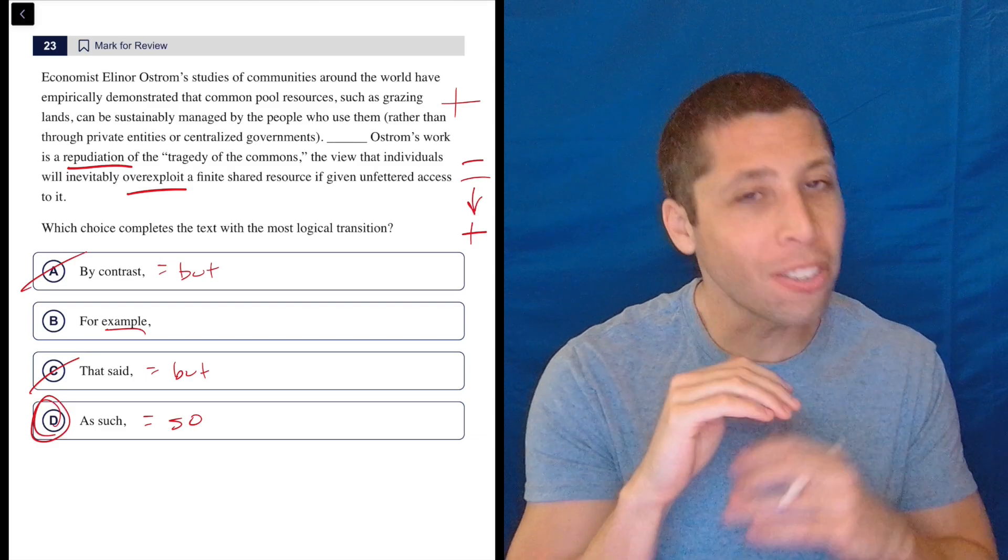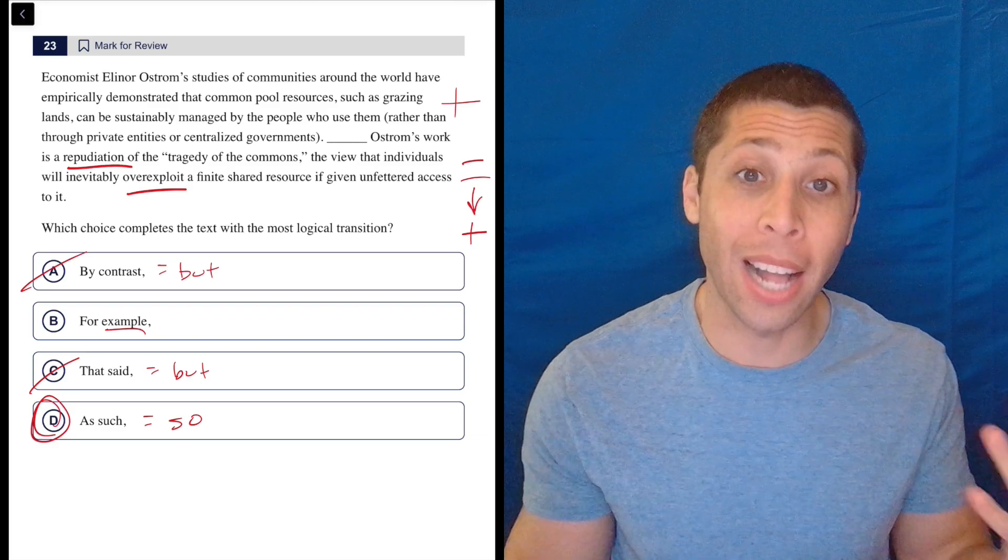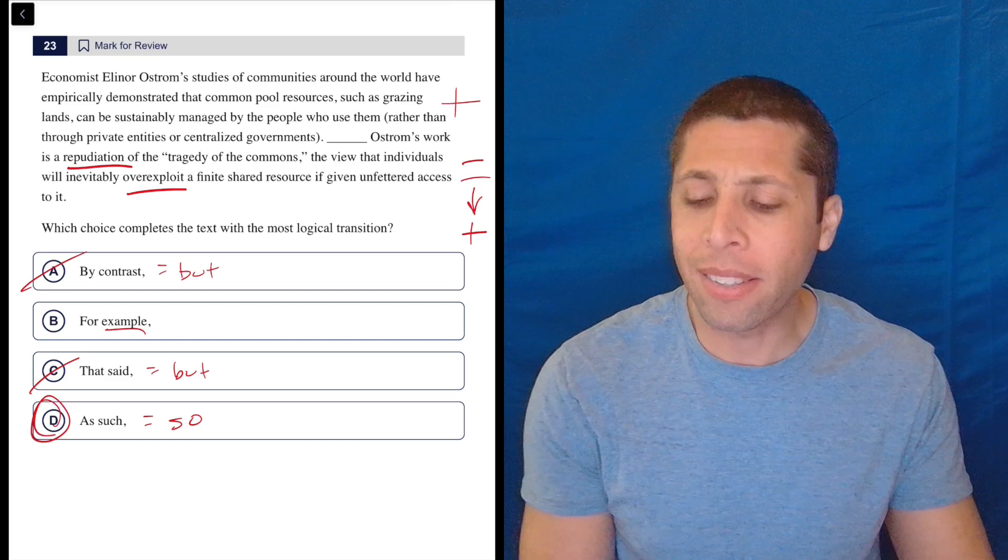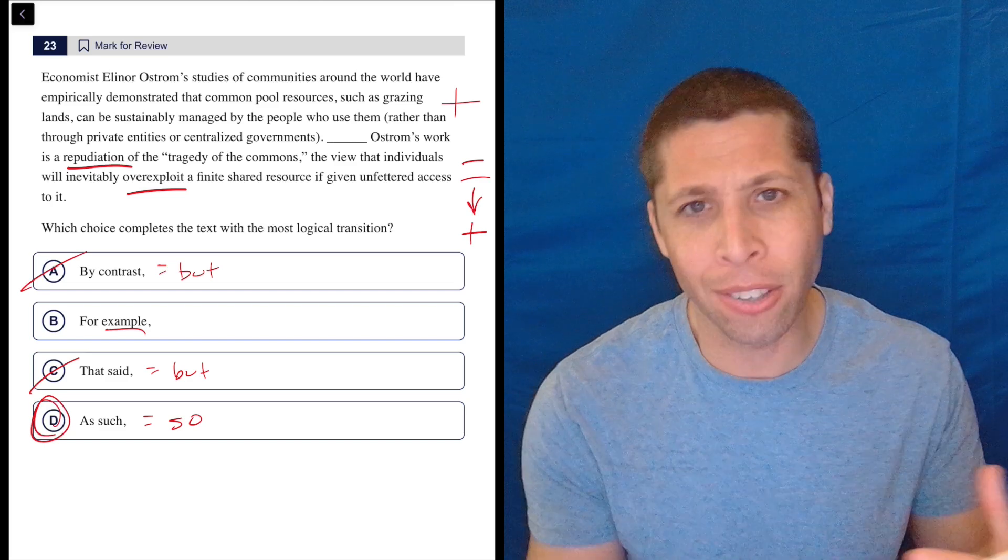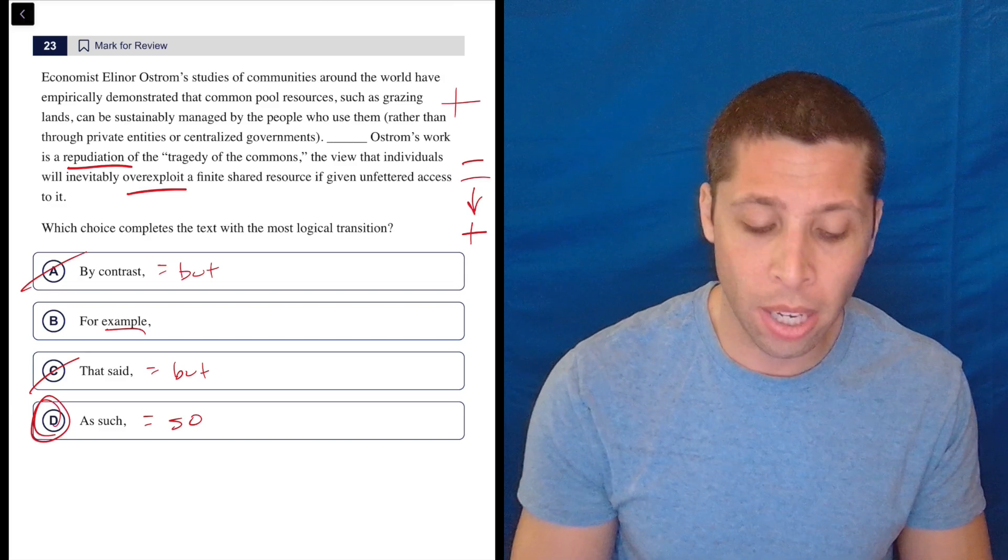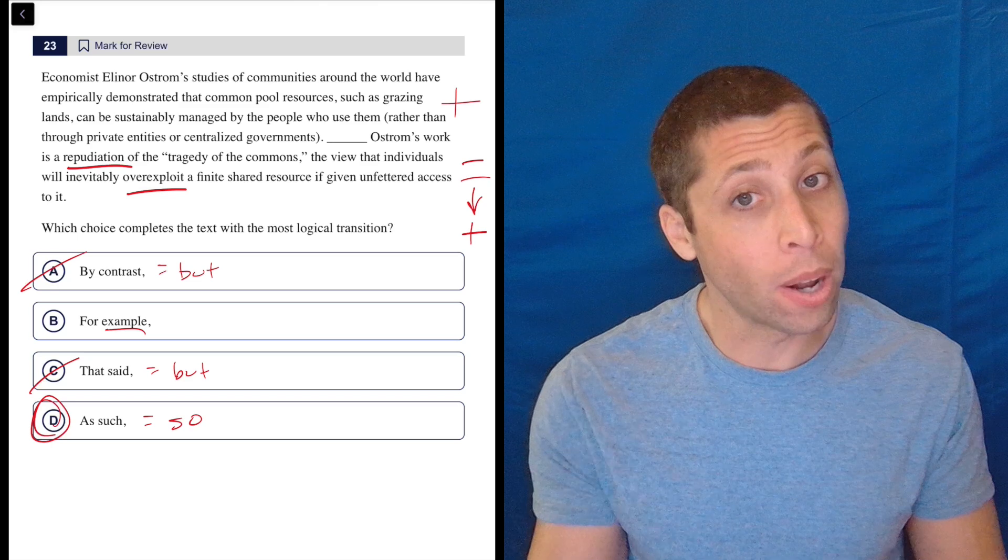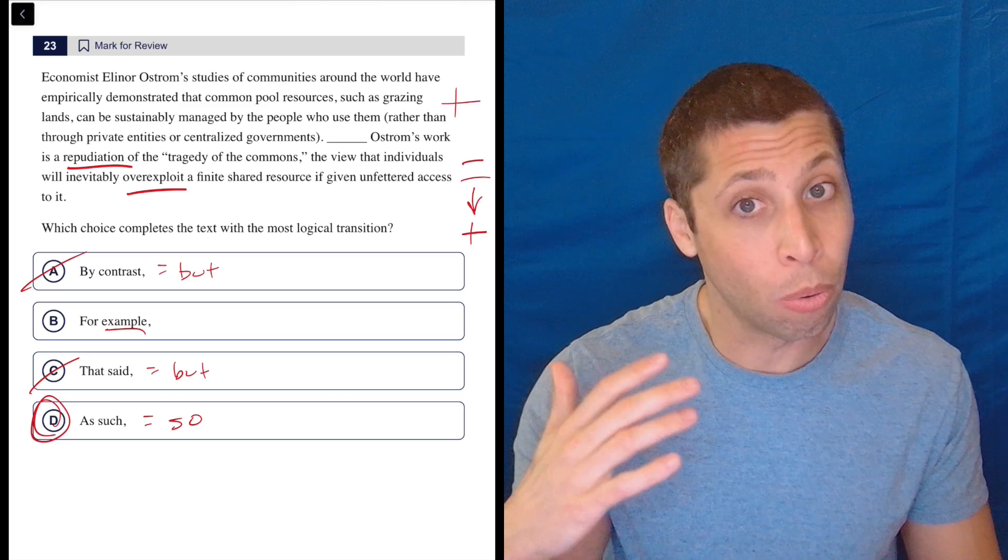So there is a little bit of a contrast. It doesn't work in the way that you would expect, though, and that's the trap of the question. But the strategy helps so well here because instead of debating is it a contrast or not, I'm kind of just like, if I trust the strategy, by contrast, that said, both mean but. And if one is right, the other has to be right, too. So they're gone.